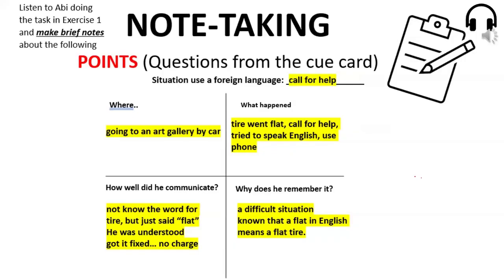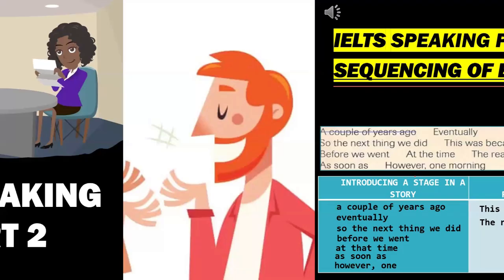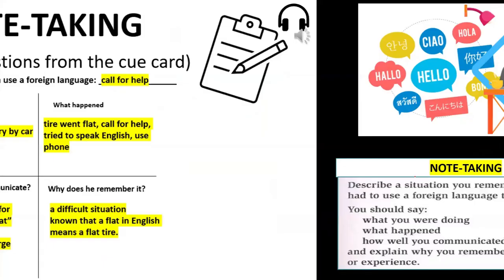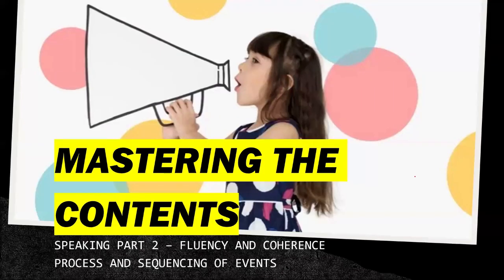To recap: in IELTS Speaking Part 2 there are questions that ask you to describe steps or a process — for example, how to prepare a meal or an outdoor activity. There is also a type of question that asks you to describe events in a story, where you use vocabulary that signals the sequence of events or the stages of the story. The next training will focus on describing events and describing reasons.